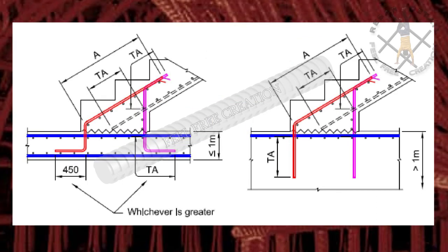Now we are looking at staircase starters. If we have foundation or slab less than 1000 mm, the left side arrangement can be suggested, with the starter bar to be looped at least 450 mm.